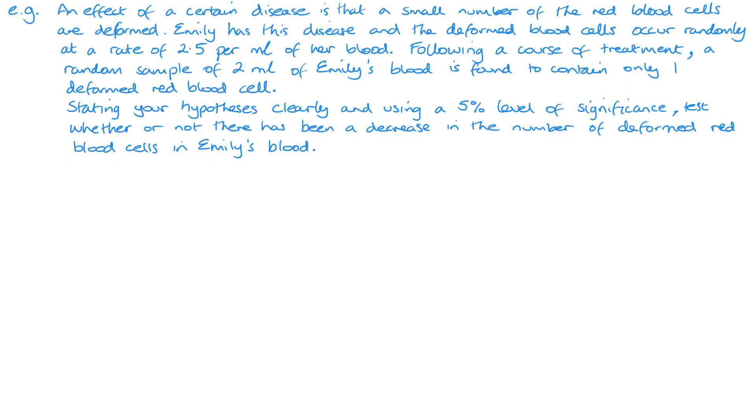Now the second example, as you can see, is a lot more wordy, has context to it, so you want to read through it carefully. And like I said before, I tend to make some notes just on the side of the page as I'm going along. So if we're looking at here: an effect of a certain disease is that a small number of the red blood cells are deformed. Emily has this disease and the deformed blood cells occur randomly at a rate of 2.5 per milliliter of her blood.